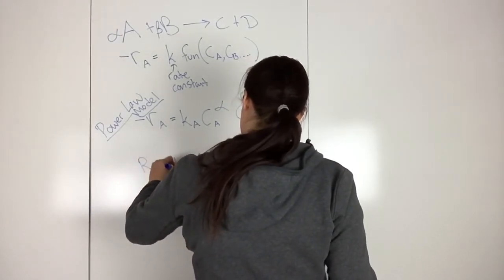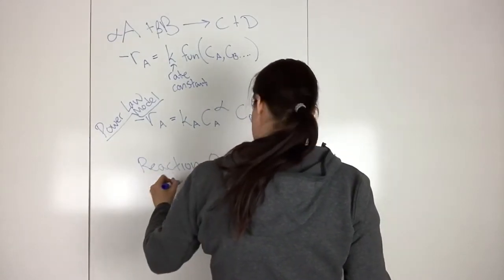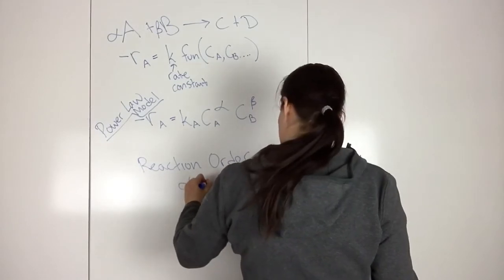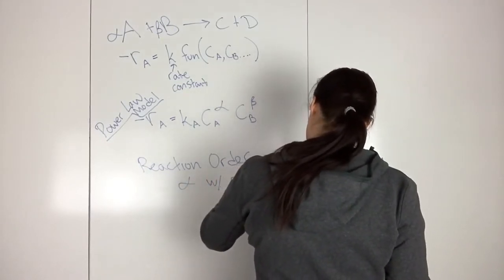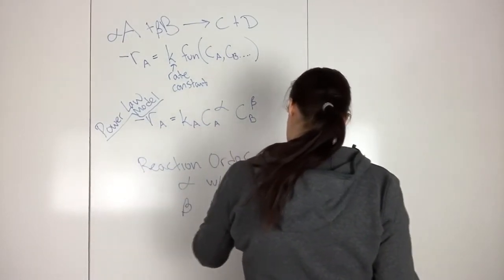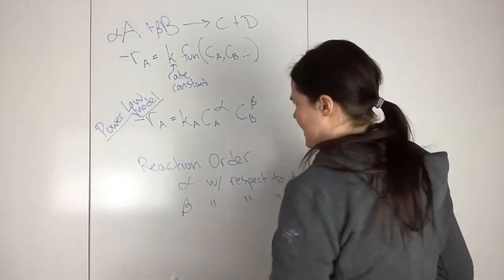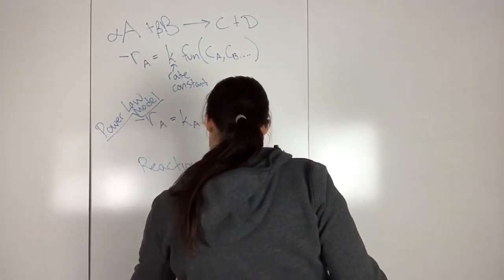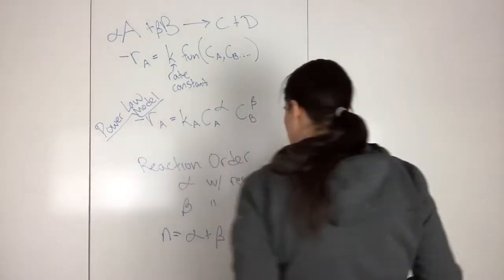Reaction order. So then you would have, for this one, alpha with respect to A, beta with respect to B. So then the overall order for this reaction would be N equals alpha plus beta.